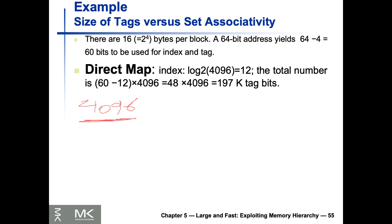Two to the power of 12 equals 4096, so we need 12 bits. We know 2^10 = 1024, 2^11 = 2048, 2^12 = 4096. In general, log base 2 of 4096 gives 12 bits for the index in a direct map cache.